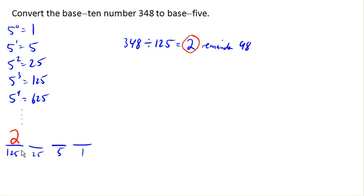So next, we're going to bring down our remainder and say now I've got remainder of 98, and let's divide that by our next lowest place value. So we're gonna divide that by 25.